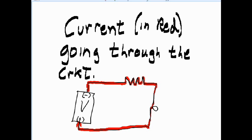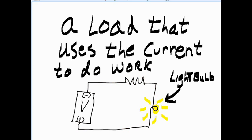It also must have current in red going through the circuit, and it must have a load that uses the current to do work, like a light bulb.